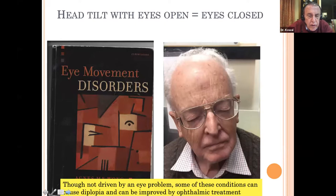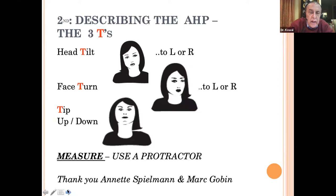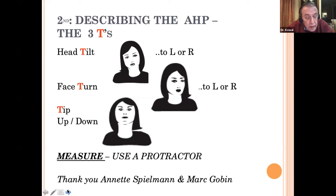If it's otoneurologically driven, we owe a lot to people like Agnes Wong and her wonderful textbook. Here is an example of a recent patient who comes in with a head tilt, and when I ask him to close his eyes and straighten his head, the head tilt does not change — it is not visually driven. When describing head tilts, there are three T's: the tilt to the left or right, the turn to the left or right, and the tip up or down. I measure these as accurately as I can, using a protractor — often an electronic protractor on my iPhone.